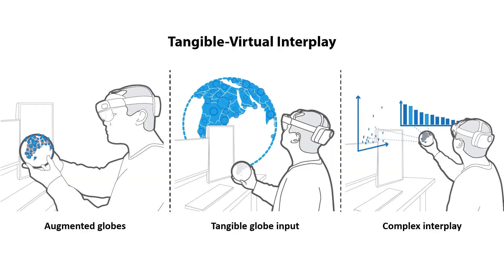The next step in our research was creating a categorization of techniques for presenting virtual data with tangible globes. We proposed a tangible-virtual interplay, which is a conceptual approach for combining tangible globes with virtual data representations. This consists of three categories: augmented globes, tangible globe input, and complex interplay. We briefly discuss these categories in the following slides. Detailed information can be found in our paper.